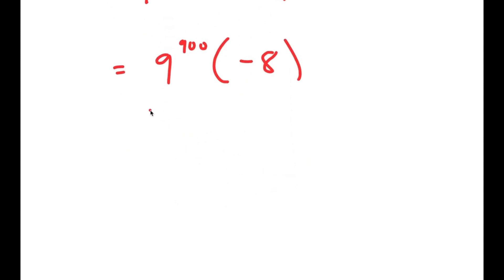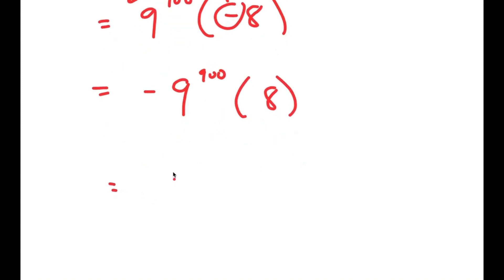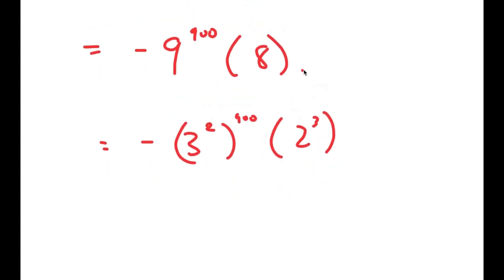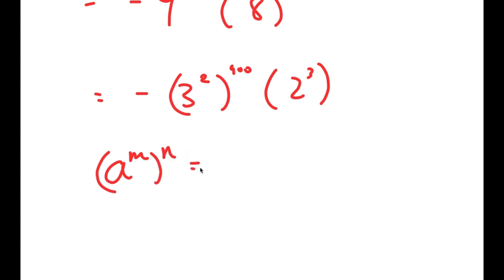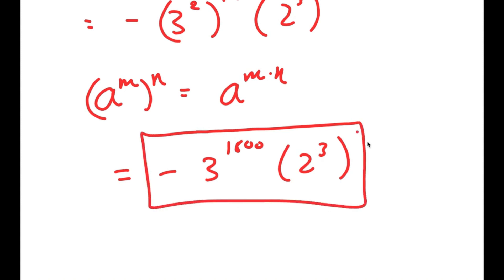Now from here, I said I was going to simplify this as much as possible. We can't get the exact value because 9 to the power of 900 is such a big number. However, we can get the simplified value. So I'm going to move the negative sign to the front: negative 9 to the power of 900 times 8. And this gives me negative 3 squared to the power of 900 times 2 to the power of 3. Using the exponential property a to the power of m to the power of n equals a to the power of m times n, I get negative 3 to the power of 1800 times 2 to the power of 3. So this is my final solution.